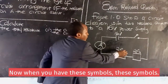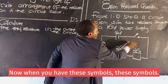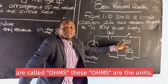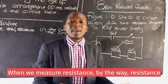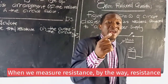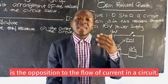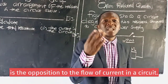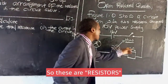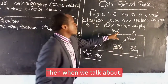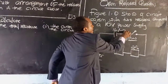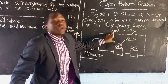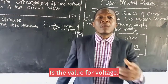When you have these symbols, these symbols are called ohms. Ohms are the units when we measure resistance. Resistance is the opposition to the flow of current in a circuit. When you talk about V, V is standing for volts, and hence the value here is the value for voltage.